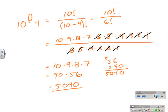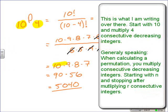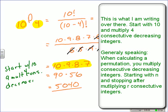What I'm hiding here are the key numbers in calculating a permutation quickly. I highlight the 10 and the 4, and then I highlight 10 times 9 times 8 times 7. In this case, we start with 10 and we multiply 4 consecutive integers. We have 10 things, and we need to pick 4 of them, so we multiply 10, and then 4 integers: 10, 9, 8, and 7. Generally speaking, when calculating a permutation, you multiply consecutive decreasing integers, starting with n and stopping after multiplying r consecutive integers.